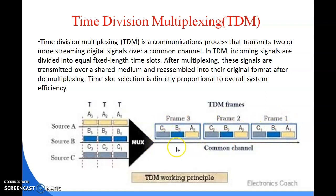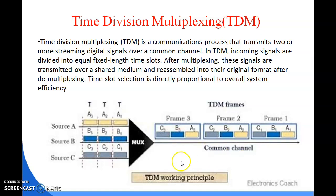If at the time a frame is created Source A has no component ready to transmit, that slot is left empty and the frame still moves forward to Source B. The frame does not wait for any delayed source. A fixed time period is given: if the source is ready within that period, its data is included; if not, the slot is skipped.